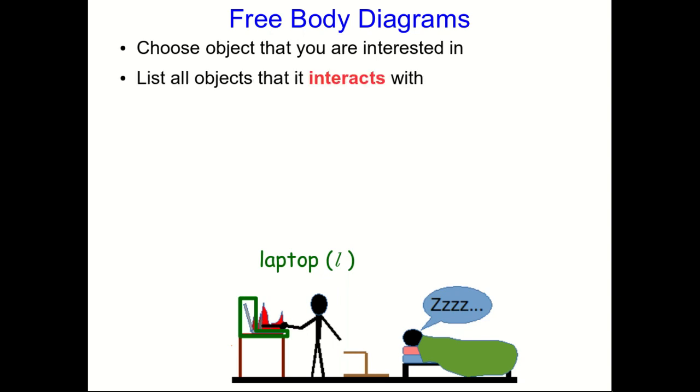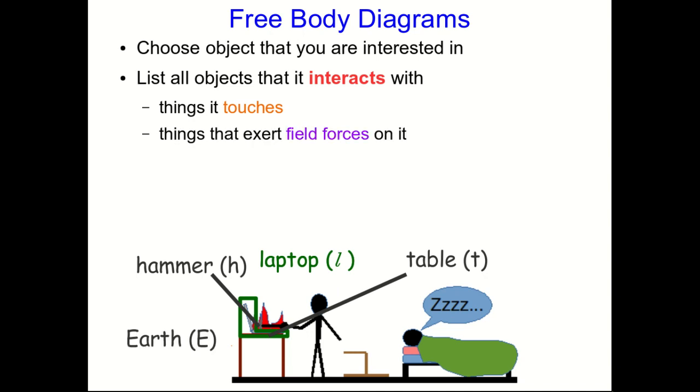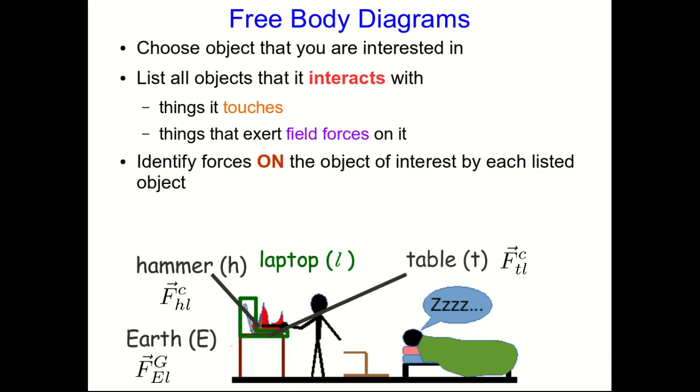Now list all the objects that the object of interest interacts with. Perhaps start with the objects that it touches, establishing notation as you go, and then things that exert field forces on it. Next, identify all the forces on the object of interest by each listed object. I can't stress the importance of the word on enough. Don't list forces exerted by the object of interest. They don't affect this object. They affect other objects, and they'll just lead you to confusion. So ignore them.